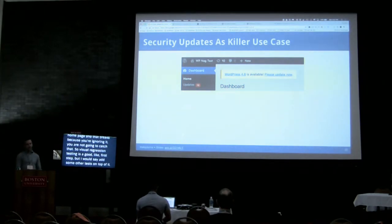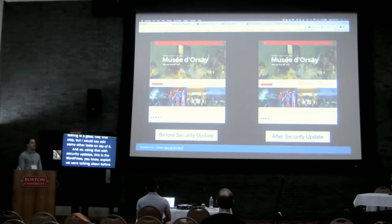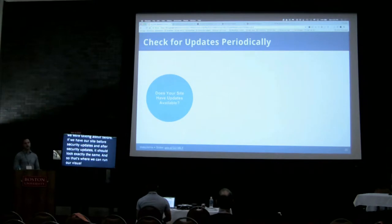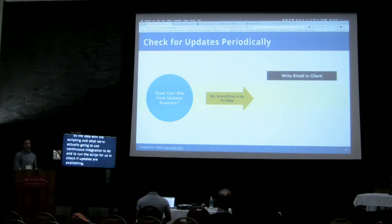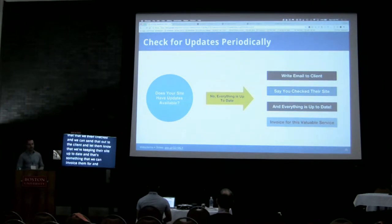Using visual regression with security updates is a good fit — if we have our site before and after a security update, it should look exactly the same. So the scripting and what we're actually going to use continuous integration to do is: first, check if updates are available. If they're not, we can document that we even checked and send that out to the client, letting them know we're keeping their site up to date — something we can invoice them for as part of the maintenance retainer.